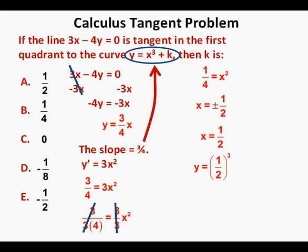Next, to find the value of y where k equals 0, we plug x equals 1/2 into the equation y equals x cubed. For an input of 1/2, our y value is 1/2 cubed, or 1/8. So 1/8 is the value of the function at x equals 1/2 when k equals 0. Then we plug x equals 1/2 into y equals 3/4 x, giving us y equals 3/4 times 1/2, which simplifies to y equals 3/8. The value of k is the amount 1/8 needs to be raised to equal 3/8, so k equals 3/8 minus 1/8.